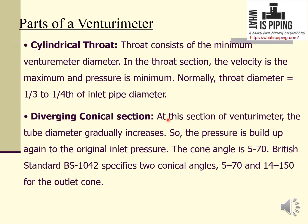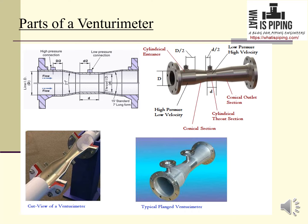In the divergent conical section, the tube diameter gradually increases so the pressure is built up again to the original inlet pressure. The cone angle is 5 to 7 degrees. British Standard BS1042 specifies two conical angles: 5 to 7 degrees, and 14 to 15 degrees for the outlet cone.